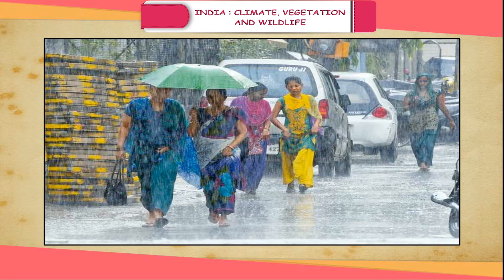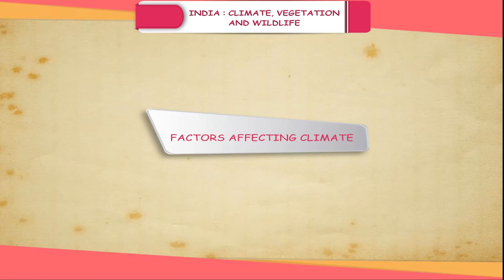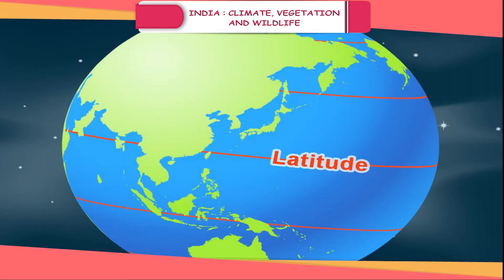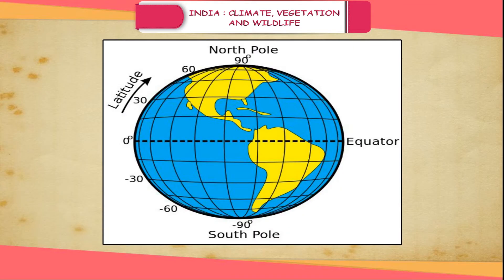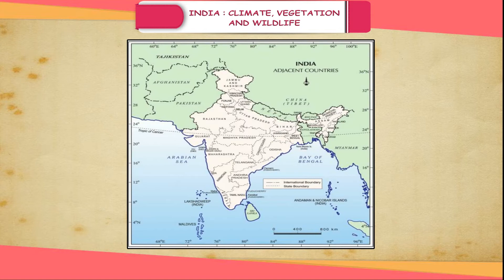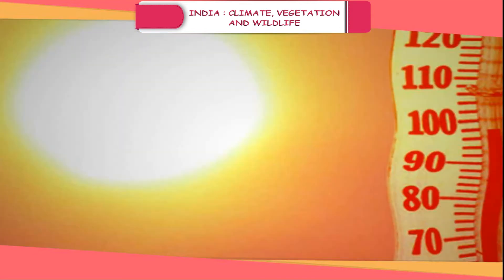Good monsoons in India mean adequate rain and good harvest. Factors Affecting Climate — Latitude: As India is located roughly between 8 degrees 4 minutes north and 37 degrees 6 minutes north latitudes, it gives India a tropical and subtropical climate. The climate is hot depending on the distance from the equator.